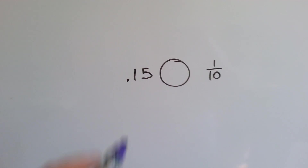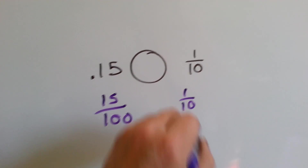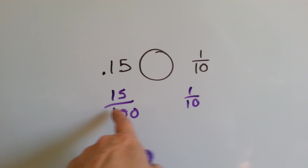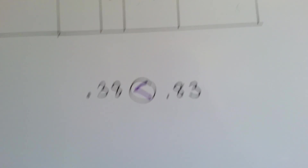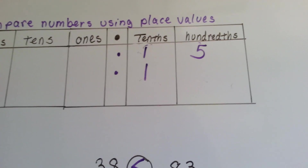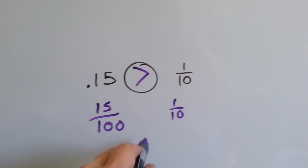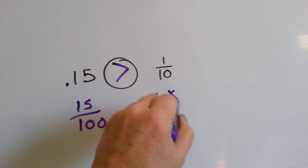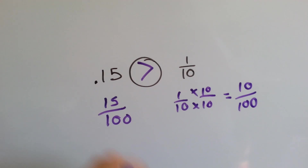What about fifteen-hundredths or one-tenth? It needs to have the same denominator. Let's use the place value chart — we've got fifteen-hundredths and one-tenth. If there's an invisible zero in one-tenth, fifteen is bigger than ten, so fifteen-hundredths is greater. If we changed one-tenth to hundredths by multiplying, we'd see it's only ten, and that's a fifteen.